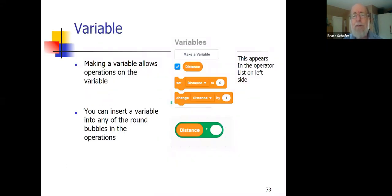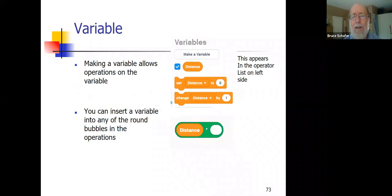If you say Make a Variable — let's say you wanted a variable called 'distance' — it creates two new blocks for you: one that allows you to set that new variable to a particular value, which is the most common use. You can drag that into your program to set the variable to zero, one, or 100, whatever is relevant. It's also common to want to add a number to a variable, and they provide a block for that convenience. The general way is to use the set function and put a formula in the oval on the right.